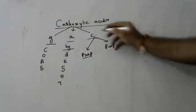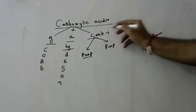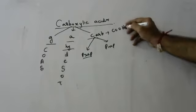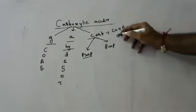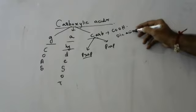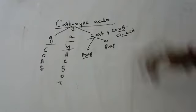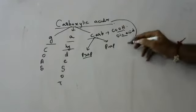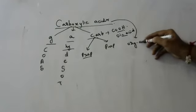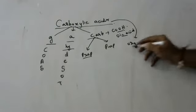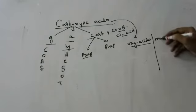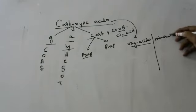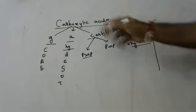Since carboxylic acids are acids, they form a functional group of COOH, and the suffix is '-oic acid'. Carboxylic acids form a group of organic acids. Organic acids and mineral acids are different — they are differentiated like this.